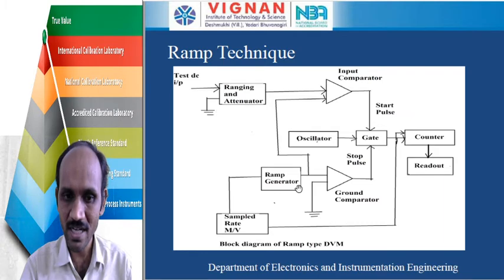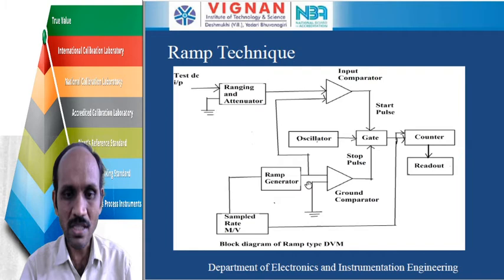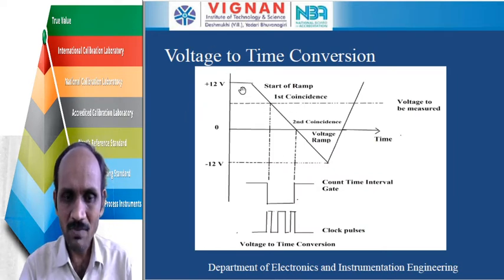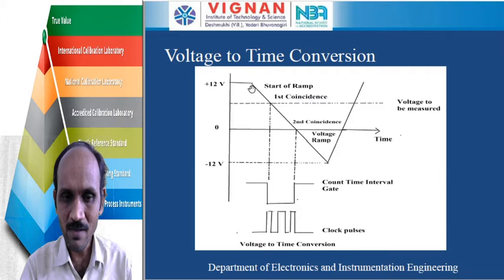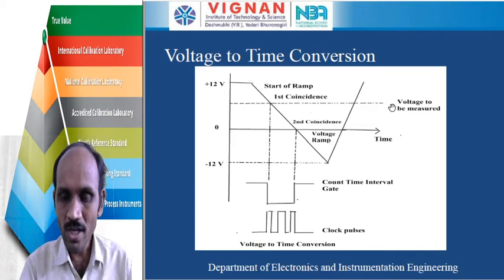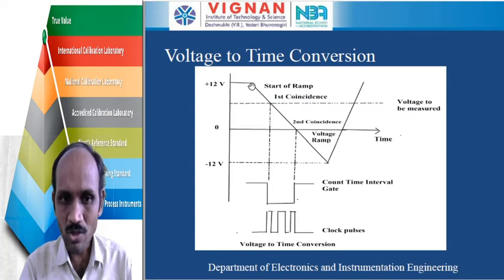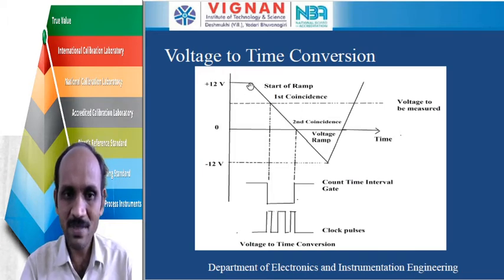The ramp signal may be either positive or negative; here we take the negative ramp only. The ramp generator generates the ramp signal within the range of plus 12 volts to minus 12 volts. The voltage to be measured is indicated as a dotted line — for example, 10 volts. The ramp signal varies from plus 12 volts to minus 12 volts, and we are taking the negative ramp only.